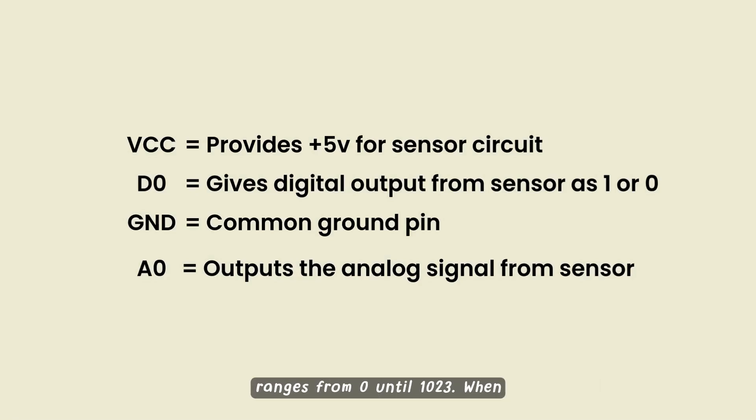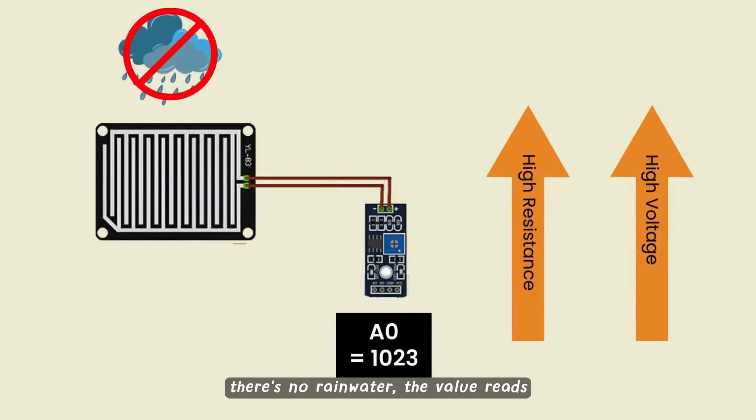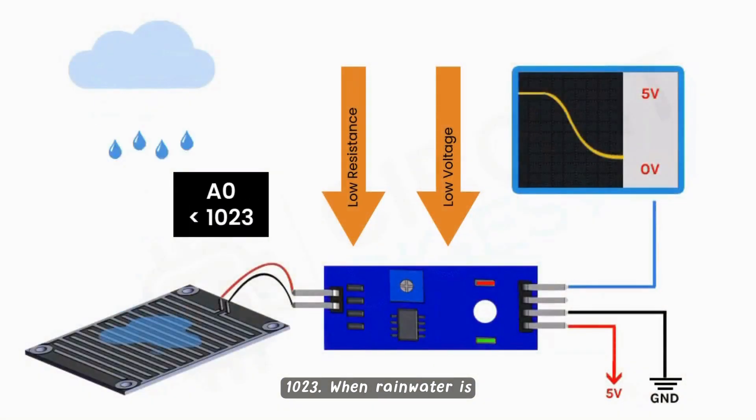The analog output value ranges from 0 until 1023. When there's no rainwater, the value reads 1023. When rainwater is detected, the value drops below 1023.